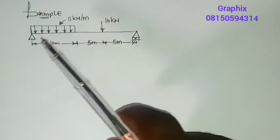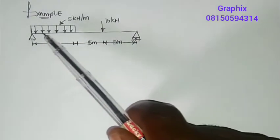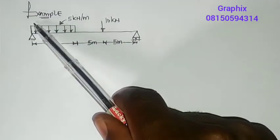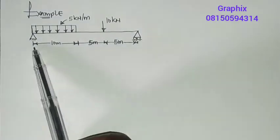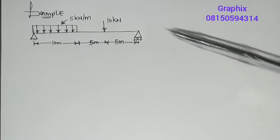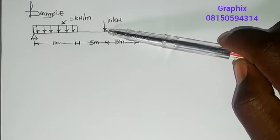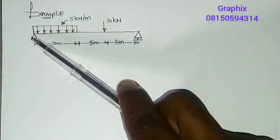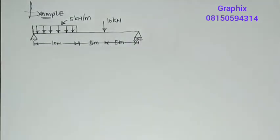This beam is carrying a UDL load — a uniformly distributed load — for a distance of 10 meters. It is also carrying a 10 kilonewton point load at another distance of 15 meters.